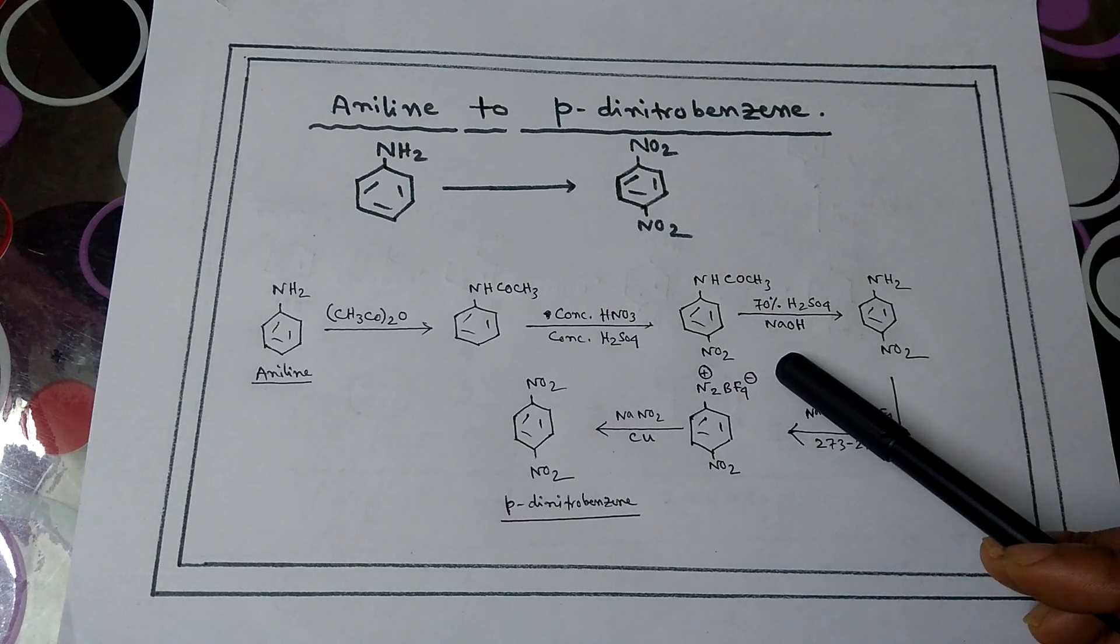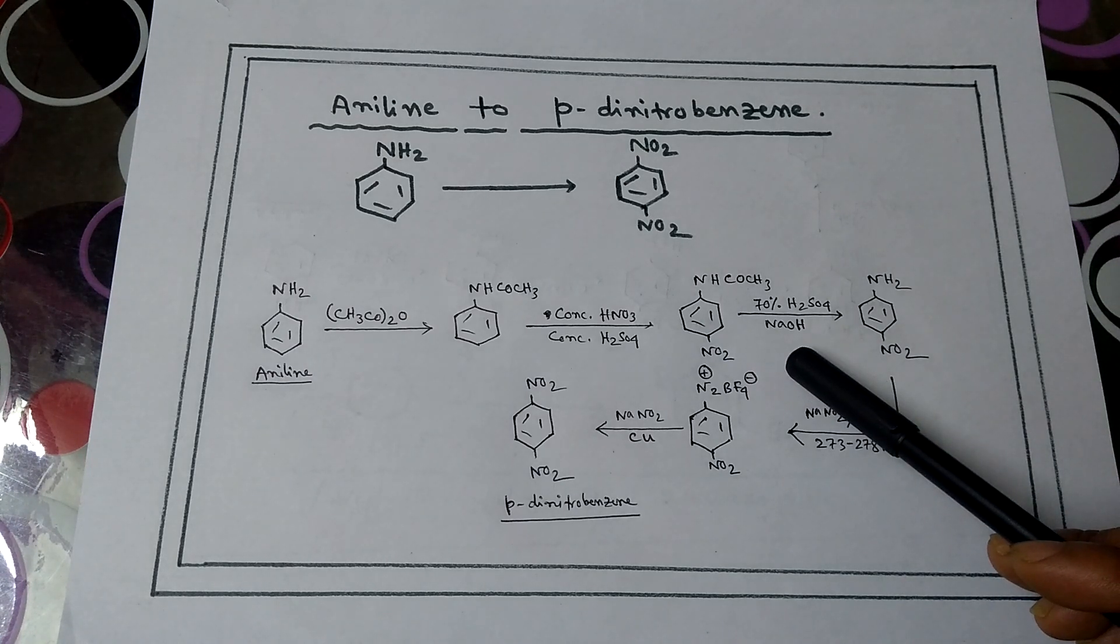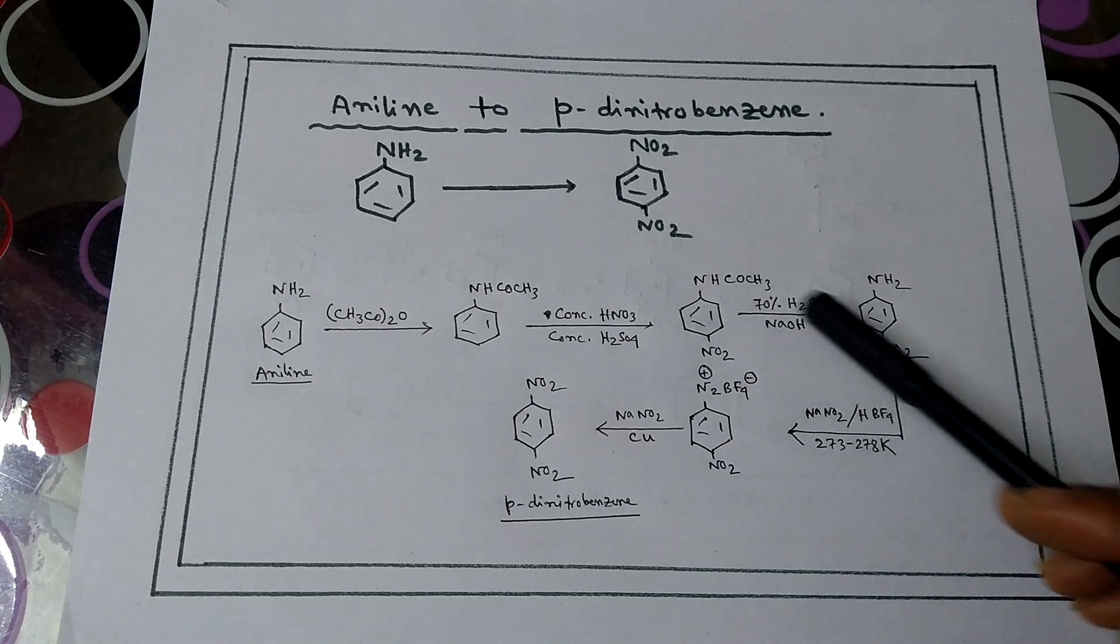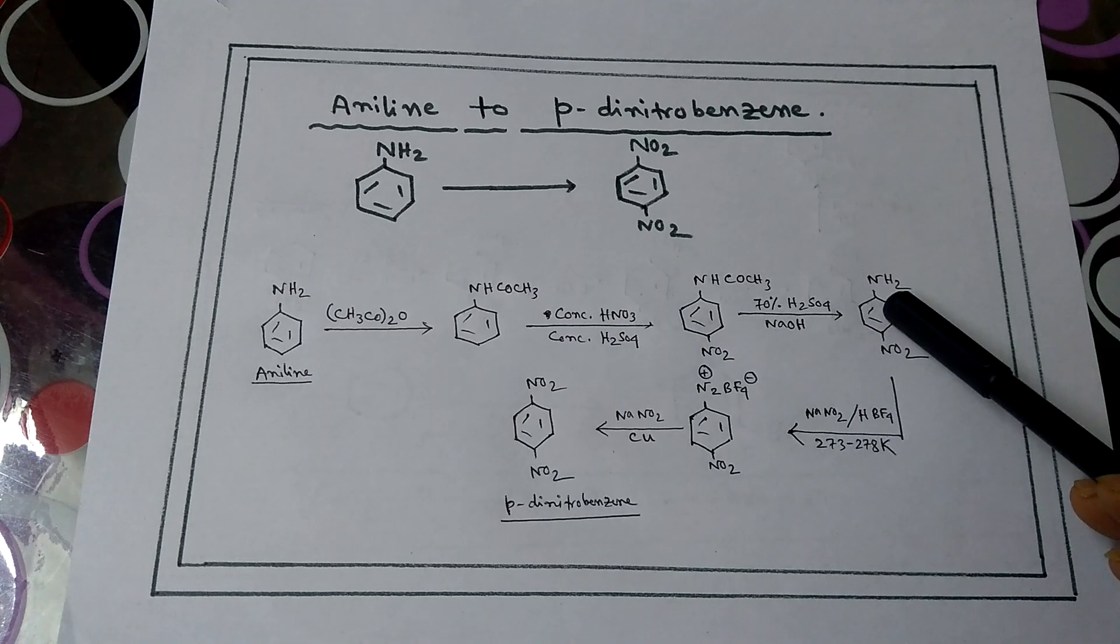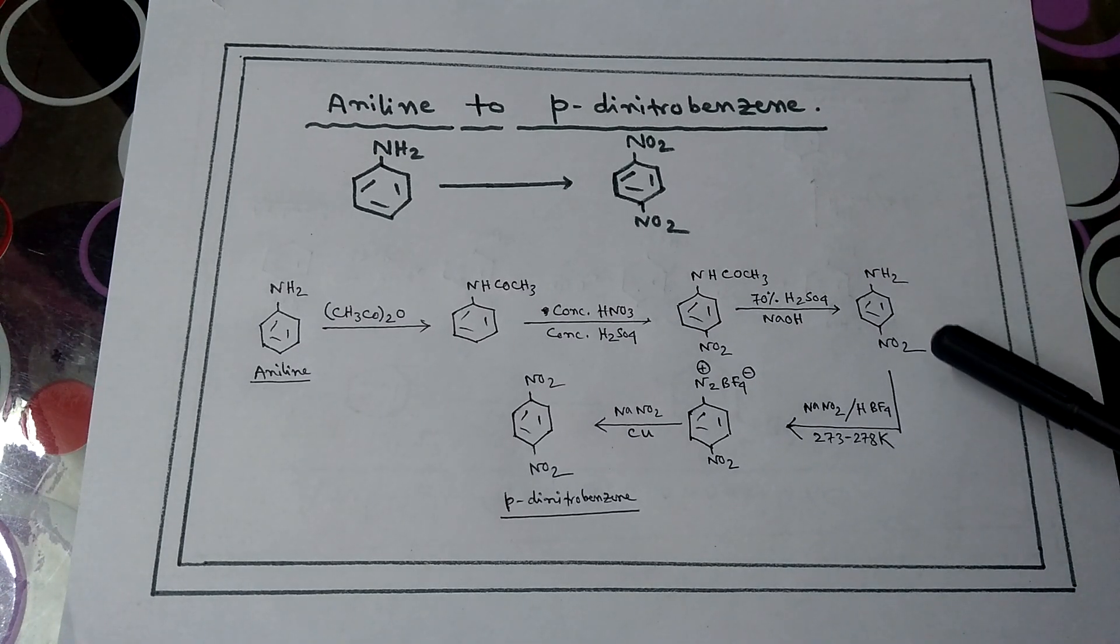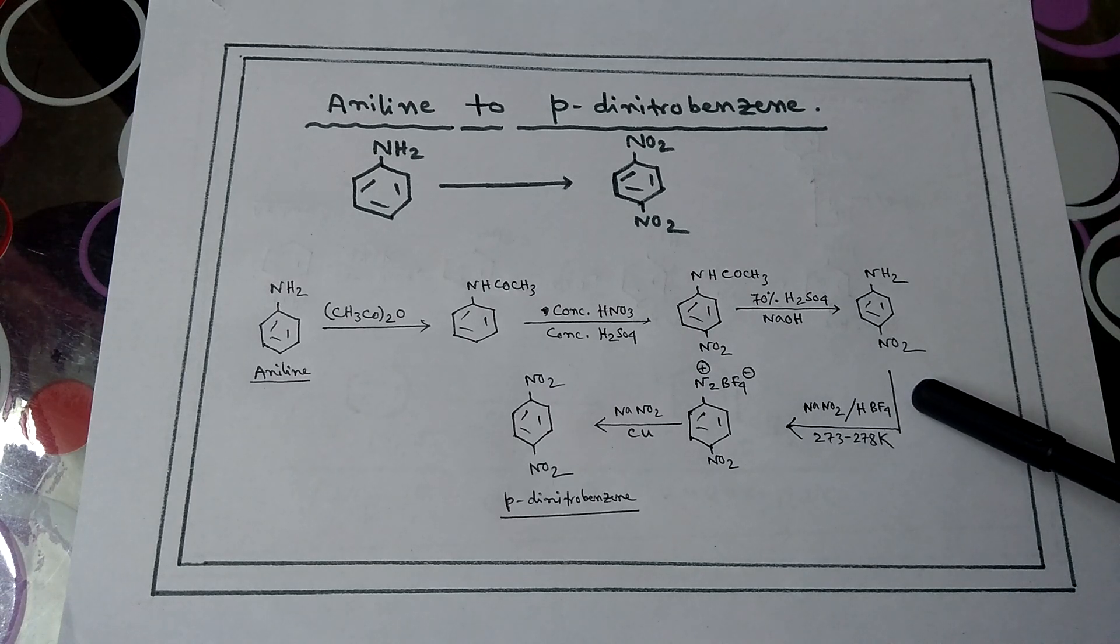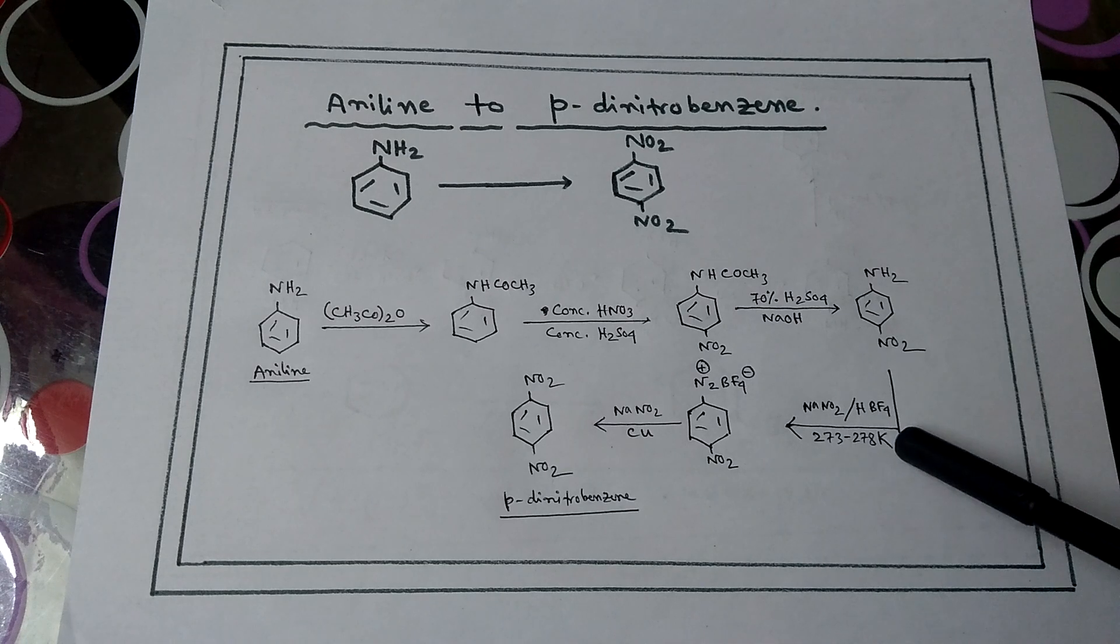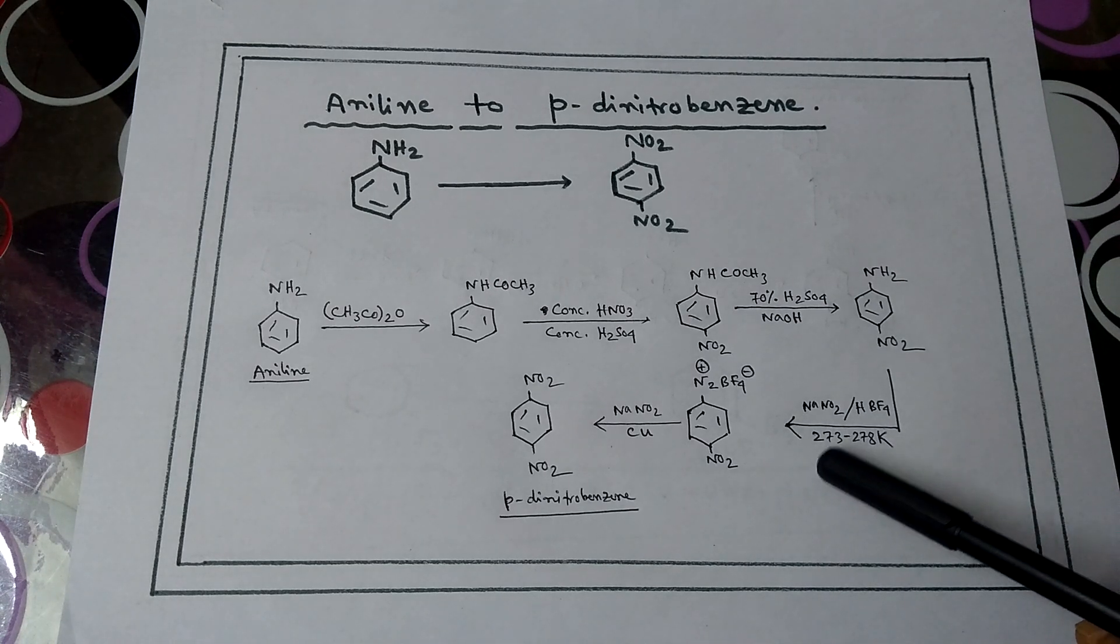Then add 70% H2SO4. The NHCOCH3 group is converted back to NH2, forming aniline. Then NaNO2 and HBF4 are added at 273 to 278 Kelvin.